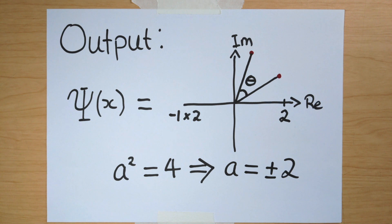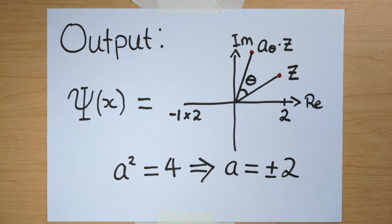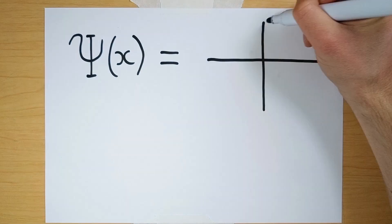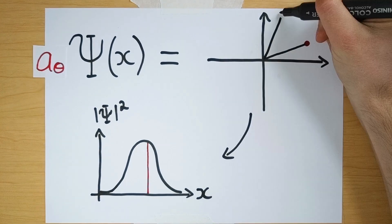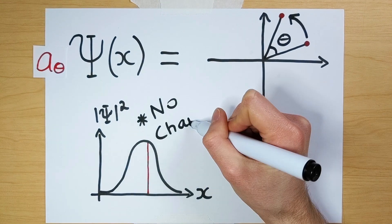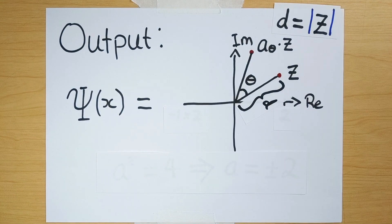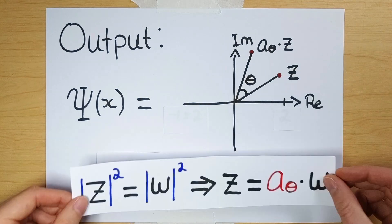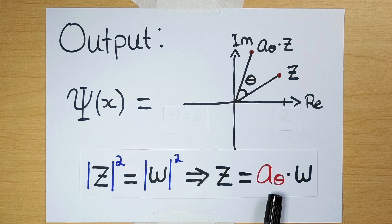It turns out that performing a rotation through any angle can also be done by multiplying the output by some complex number. The take-home is that multiplying the wave function by this number just rotates the output in the complex plane, which doesn't change that all-important distance from the origin, and hence doesn't change the probability density function. This distance is called the modulus of the complex number, indicated with bars around the number. So if two complex numbers have the same modulus squared, they are related by some rotation.